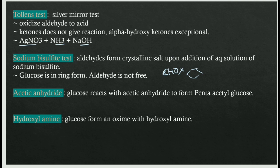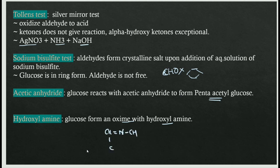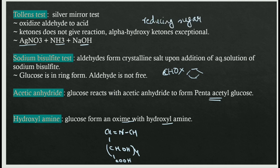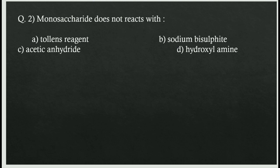Acetic anhydride: glucose reacts with acetic anhydride to form penta-acetyl glucose, so monosaccharides can react with acetic anhydride. Hydroxylamine: glucose forms an oxime with hydroxylamine, with structure CH=N-CH-(CHOH)4-COOH·H. Since reducing sugars (monosaccharides) do react with Tollens reagent, and also react with acetic anhydride and hydroxylamine, monosaccharides do not react with sodium bisulfite — that is the answer.